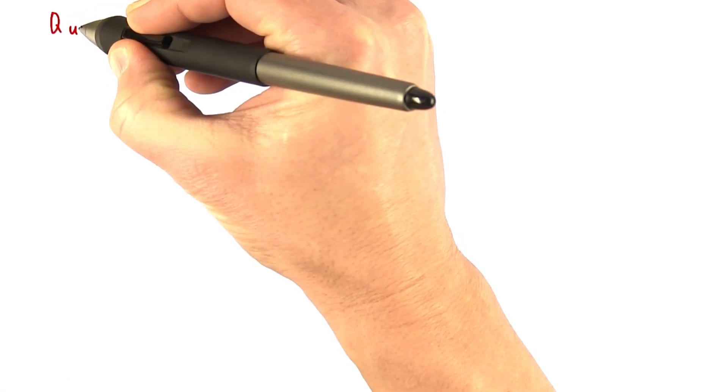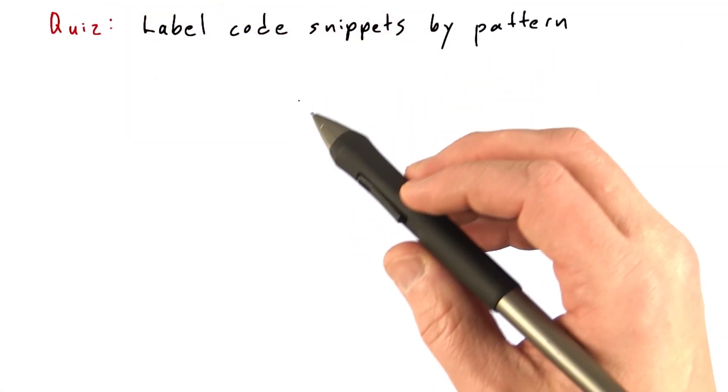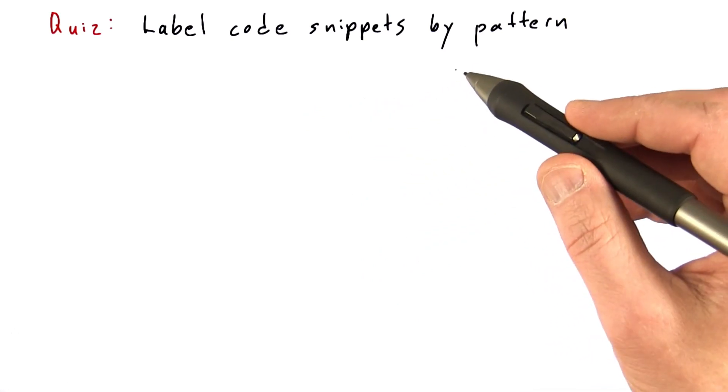Okay, let's have a quiz on communication patterns. I'm going to give you a bunch of code snippets, and I'm going to ask you to label them according to the parallel communication pattern that they embody.